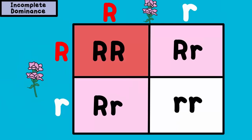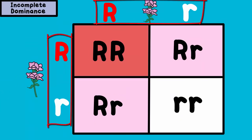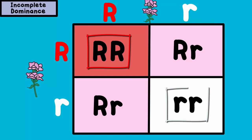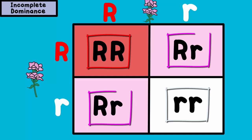If you cross two pink flowers — big R, little r — as shown in this Punnett square here, you can get offspring that are red, white, or pink.